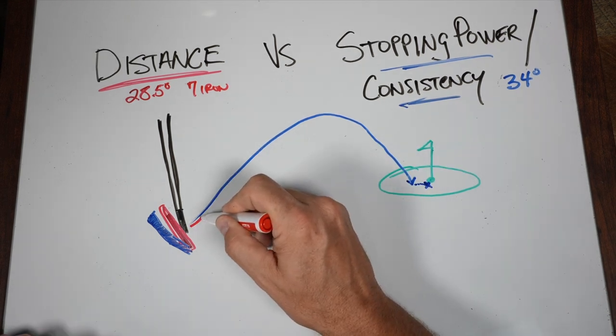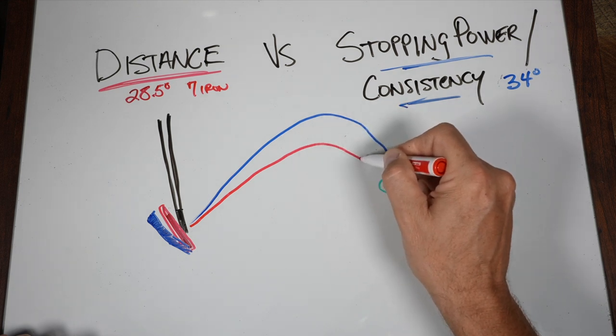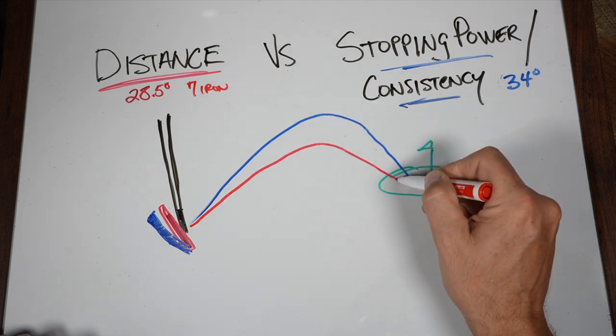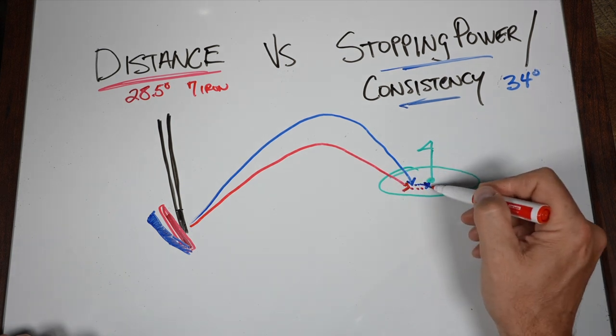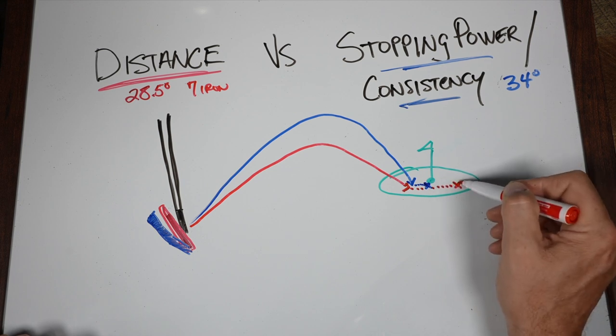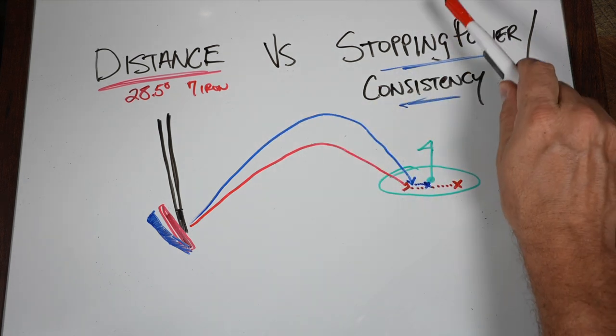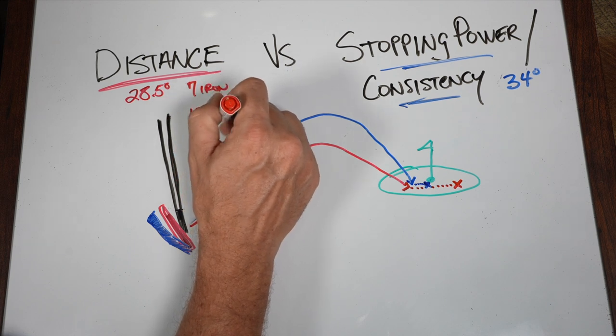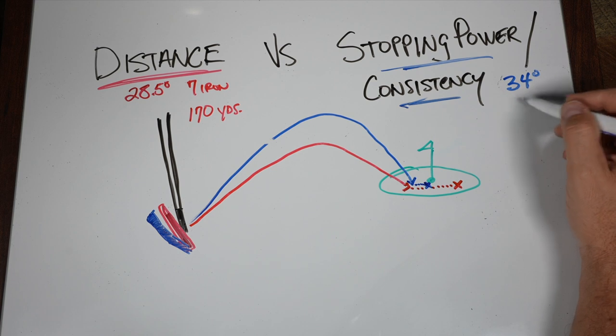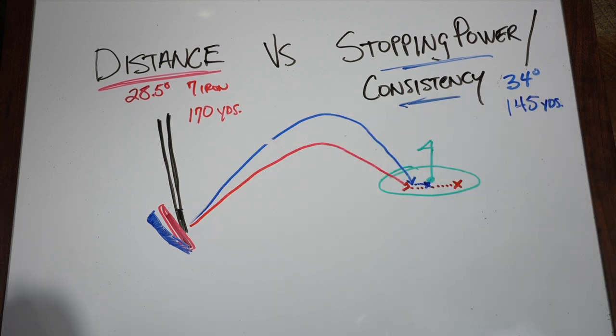With our distance club, we're going to get likely a lower trajectory. We're going to get a shallower angle of descent. We might hit in that same spot, but what happens is we're going to get a whole lot more rollout and now the ball ends up back here. That's the trade-off with distance and stopping power. You might be able to hit this 7-iron, let's say, 170 yards, and you might be able to hit the more traditional 7-iron only 145 yards.